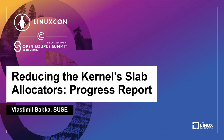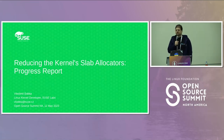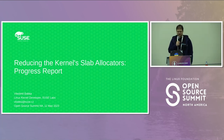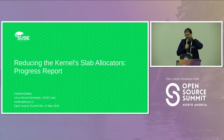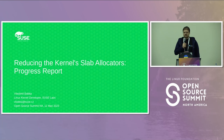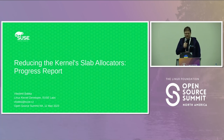Hi everyone, my name is Vlastimil and I work for SUSE in the labs department in one of the kernel teams and an upstream memory management kernel community. We just had the LSF/MM conference earlier this week and some of the things I will be saying will report on the outcome of the discussions we had there. I'm going to be talking about the slab allocators in the kernel, because years ago I became one of the maintainers of this subsystem and also handle the git tree. The best way to maintain something is to reduce the size of it to make it more maintainable, so that's my current project.